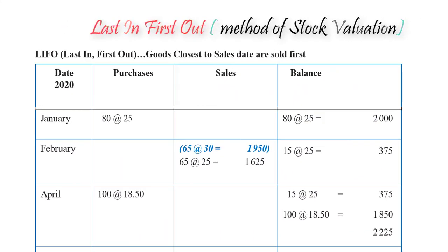In our previous video we looked at the first-in first-out method of stock valuation, where we saw that the first set of units in stock are all sold out before we go to the second or newer set of stock items. In this method, we would look at selling the new set of items first. For instance, if I bought goods on Monday and then on Tuesday, I would sell out all those bought on Tuesday first before touching those bought on Monday.